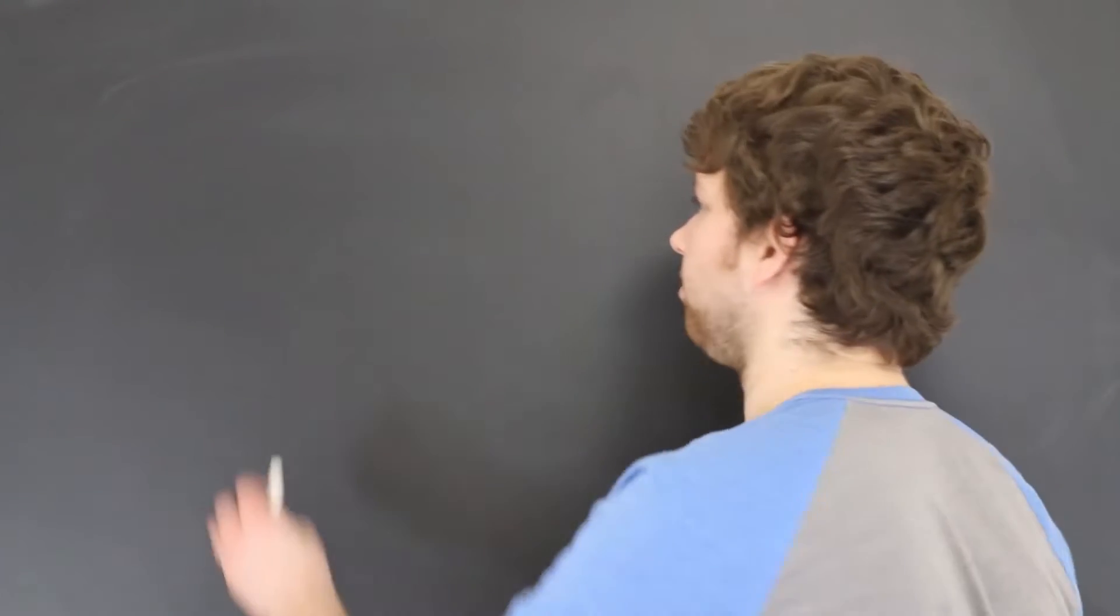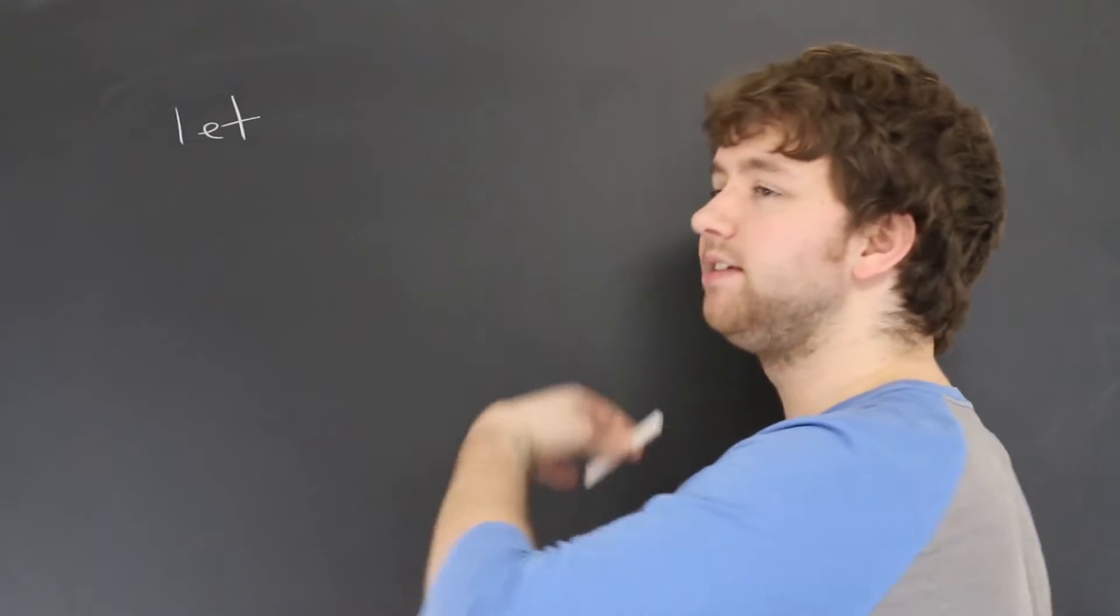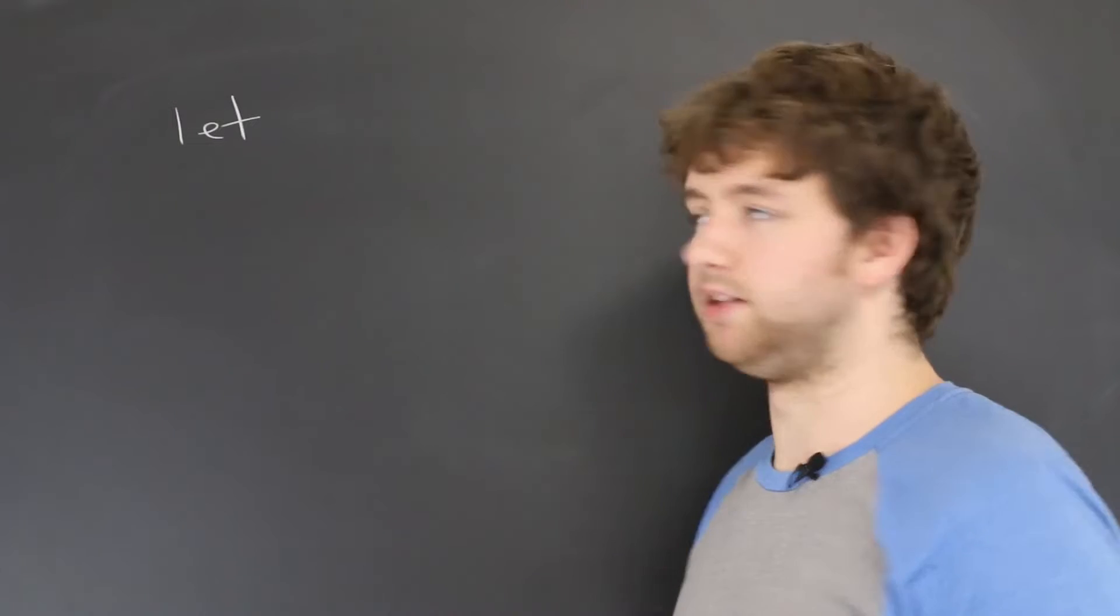Alright, so what exactly is an array? Well, you can think of an array as a collection of things. The way you create an array is like this: let, and then you give it a name. Typically all the stuff in the array is going to be related in some way.